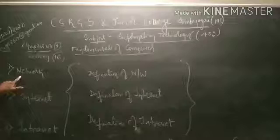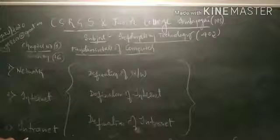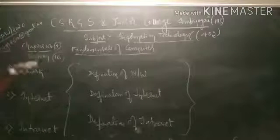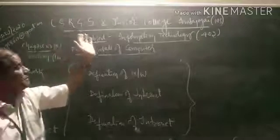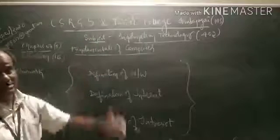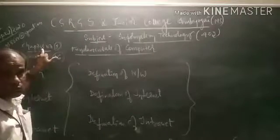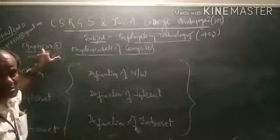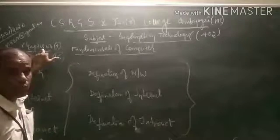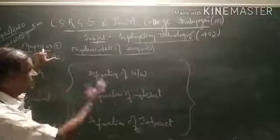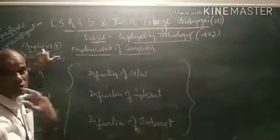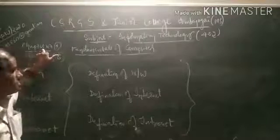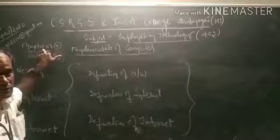Today we will cover network, internet, and intranet definitions. These topics will come again in the last lesson, chapter six. Part B has six computer lessons. One month equals one lesson — Fundamentals of Computer in April, then one more lesson each in June, July, September, and so on, completing the syllabus before the March exam.